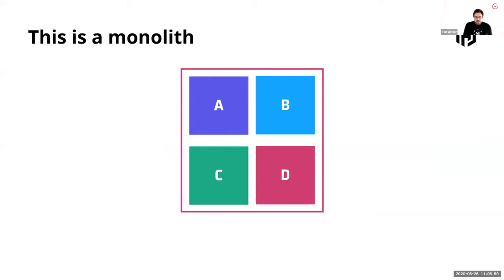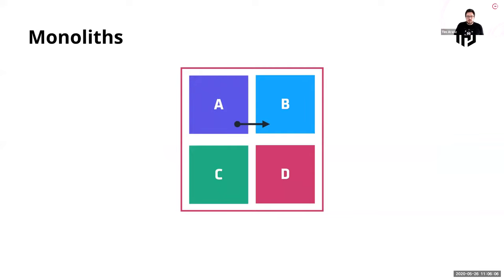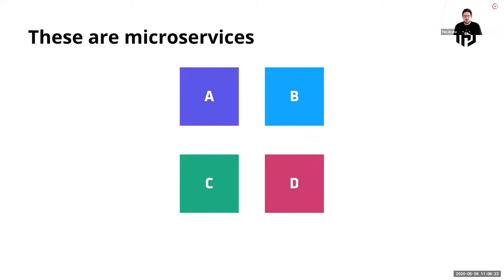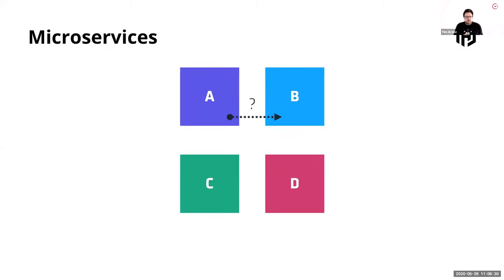In monolithic applications, certain things were just built in. For example, if service A wants to talk to service B, this is just an in-memory function call — there's no network hop, no requirement to actually find service B on a network. But as soon as we move into the microservices architecture, connecting A to B is much more difficult because it's not just a function call. We need to traverse the network because all those different services — A, B, C, and D — typically run on different systems, and they might even run in different data centers across the globe.